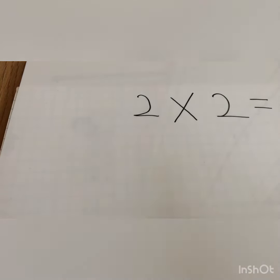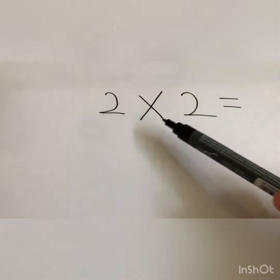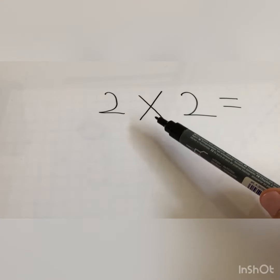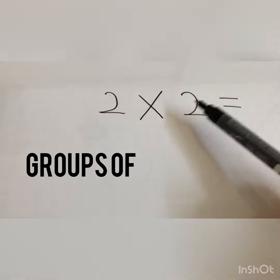I like to read it as two groups of two and that helps me to think about what this question is asking me to do. So every time you see the multiplication sign it means groups of, so two groups of two.